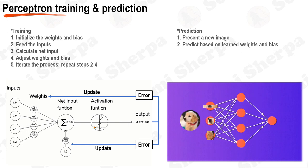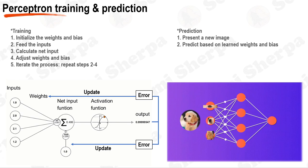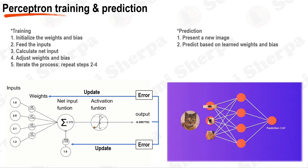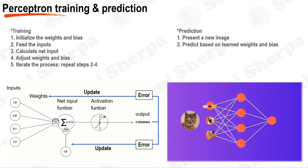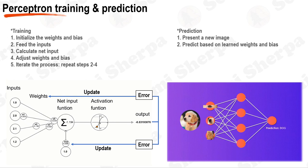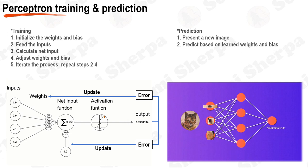When training a Perceptron, we're essentially adjusting weights and biases based on the input we provide, so it can make accurate predictions on new, unseen data. Let's take an example where we're trying to determine whether an image is of a cat or a dog based on three characteristics: ears, nose, and eyes. First, initialize the weights and bias — at the start, the Perceptron has no idea what weights to assign to each characteristic, so it initializes them randomly. Second, feed the input — we give the Perceptron an image, say an image of a cat, and it takes the input features such as ears, nose, and eyes, and multiplies each input with its corresponding weight.